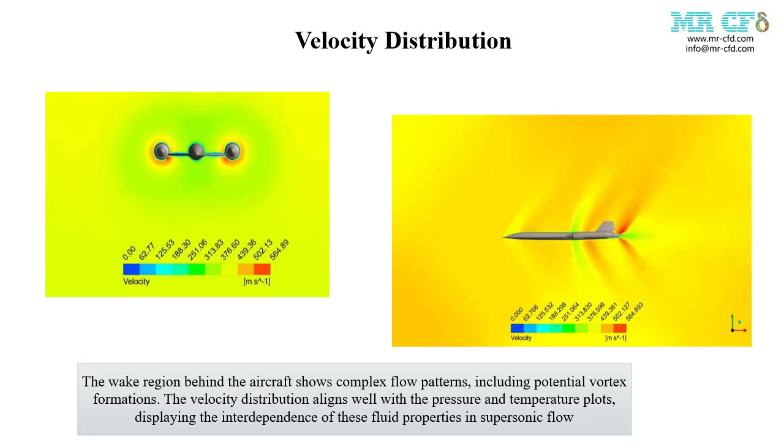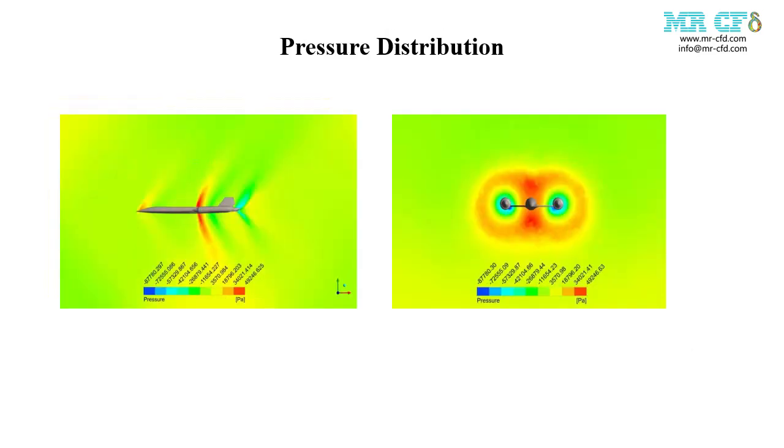Let's see how pressure is distributed in the domain around the aircraft. The pressure contours reveal significant variations around the aircraft, particularly at the nose and engine inlets.